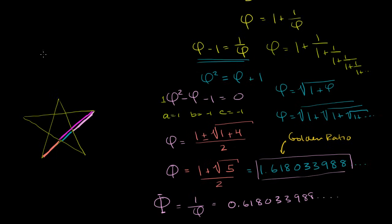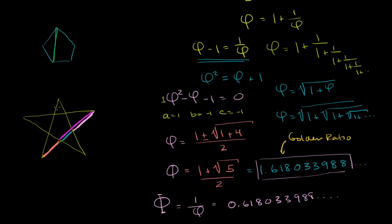If you look at something like a regular pentagon — where all the angles are the same and all the sides are the same — and you take any of the diagonals, the ratio of any diagonal to any of the sides is once again this golden ratio. So it keeps showing up on and on and on. And we can do interesting things with the golden ratio.